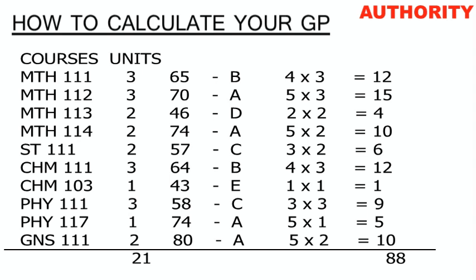Continuing: CHEM 103 scored 43 (E = 1 point); 1 × 1 = 1. PHY 111 scored 58 (C = 3 points); 3 × 3 = 9. PHY 117 scored 74 (A = 5); 5 × 1 = 5. GNS 111 scored 80 (A = 5); 5 × 2 = 10. Now sum all the grade points: 12 + 15 + 4 + 10 + 6 + 12 + 1 + 9 + 5 + 10 = 88 total points.